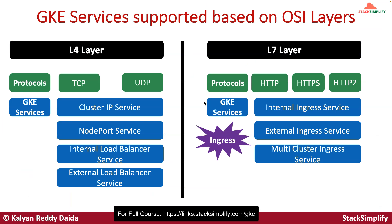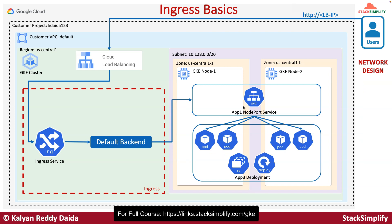From there, we will move on to understanding L4 and L7 layer load balancers. We already implemented cluster IP service, node port service, and internal and external load balancer services in the first 18 demos. Now we will focus on learning and implementing L7 layer load balancing, which is ingress services — implementing both external and internal ingress service. We have close to 17 demos implemented for ingress because ingress is a huge and very important concept from a Kubernetes perspective when cloud is in the picture.